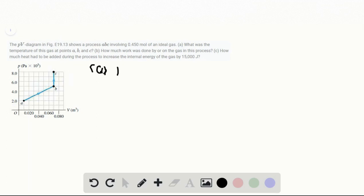We can simply use the relation PV equal to nRT. So the temperature T is PV over nR to determine the temperature at each state.